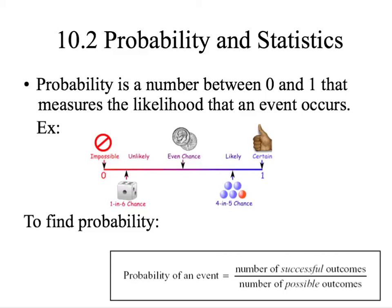Section 10.2, Probability and Statistics. Probability is a number between 0 and 1 that measures the likelihood that an event occurs.